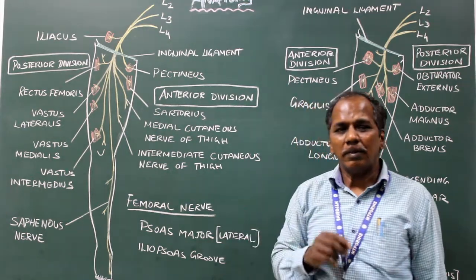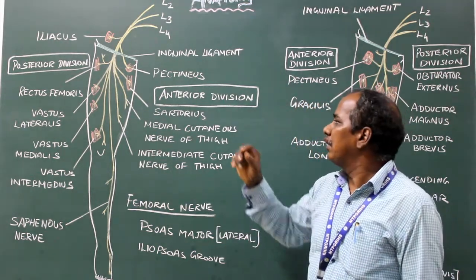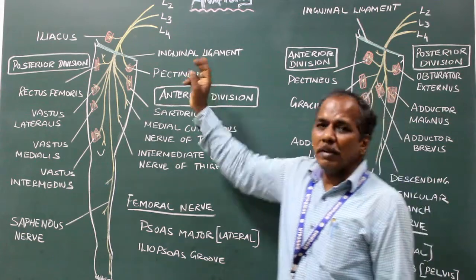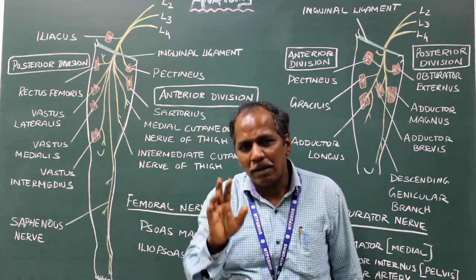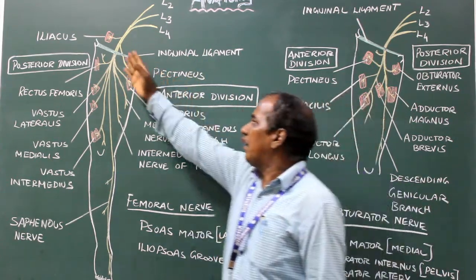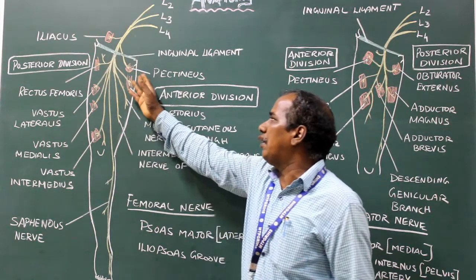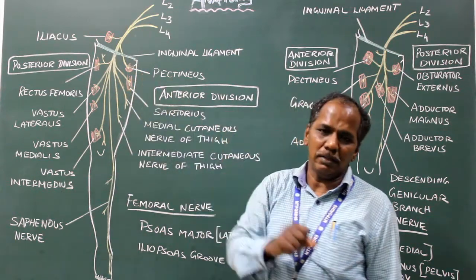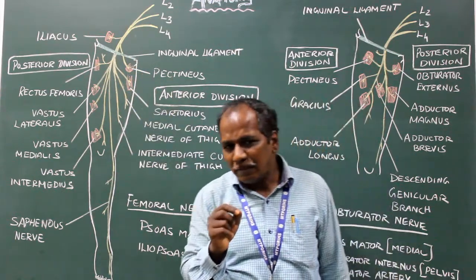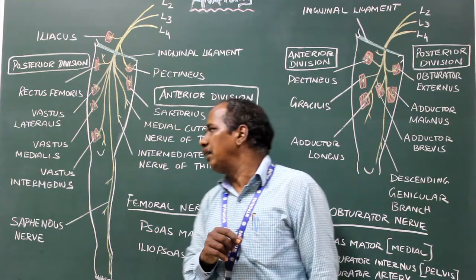From the main trunk it gives two muscular branches: one for iliacus and the other for pectineus.